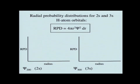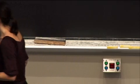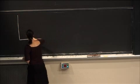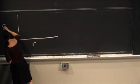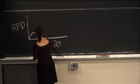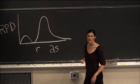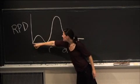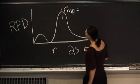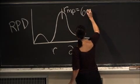We can look at other radial probability distributions. For a 2s orbital, you get a graph starting at zero with one node, and we can define that most probable radius. It turns out that for a 2s orbital, that's equal to 6 times a₀. So it's most likely that an electron in a 2s orbital of hydrogen is six times further away from the nucleus than it is in the 1s orbital.